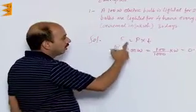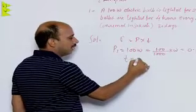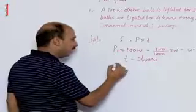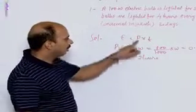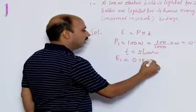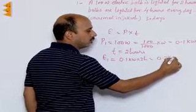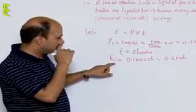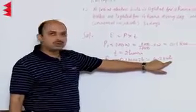Time is 2 hours, so we write T equal to 2 hours. Energy consumed E1 is equal to power into time, that is 0.1 kilowatt into 2 hours, which equals 0.2 kilowatt hour. This is the energy consumed by the 100 watt bulb in one day.